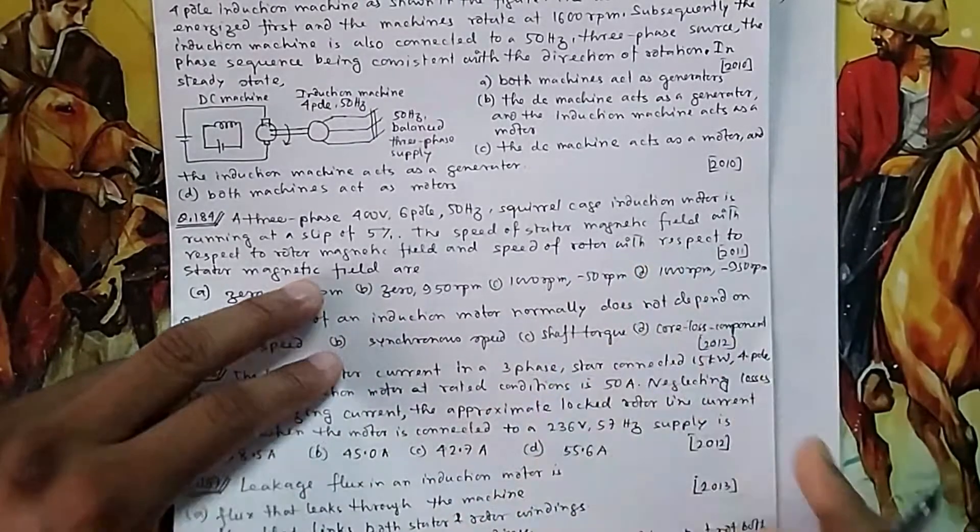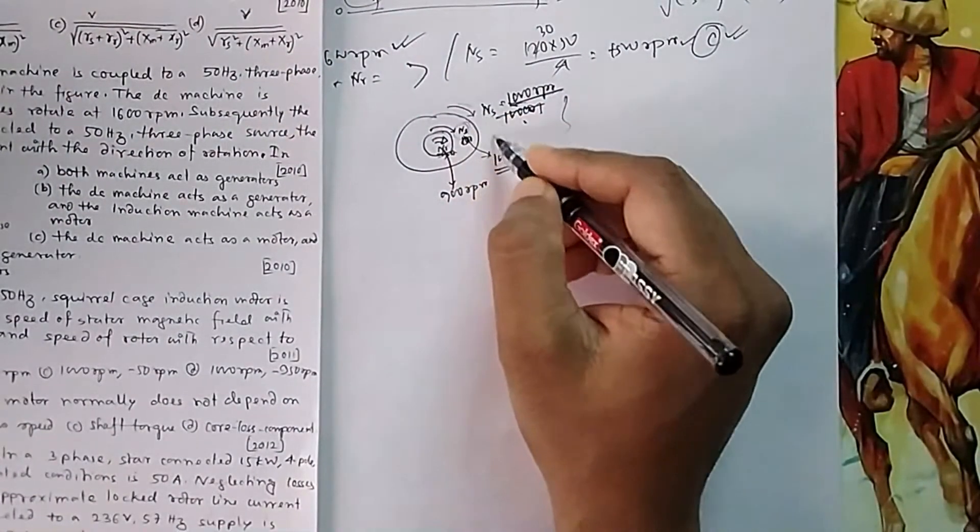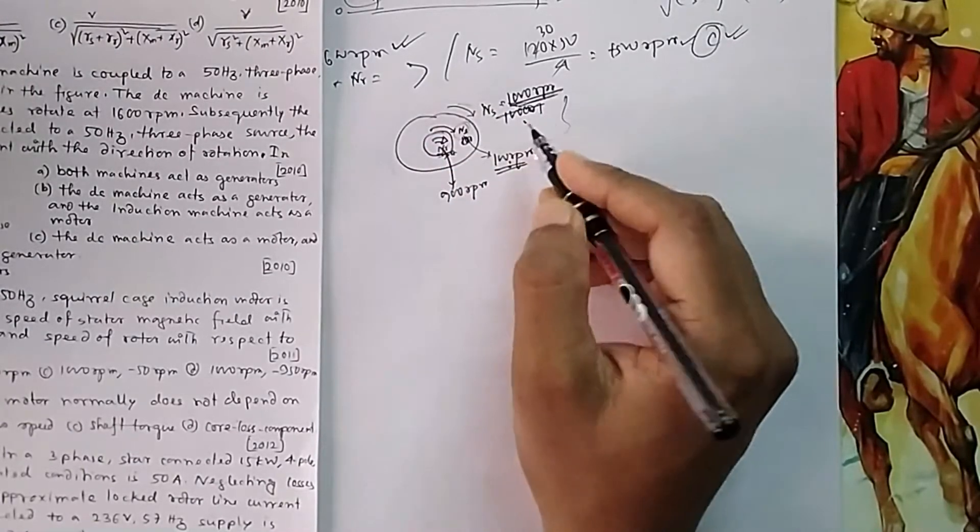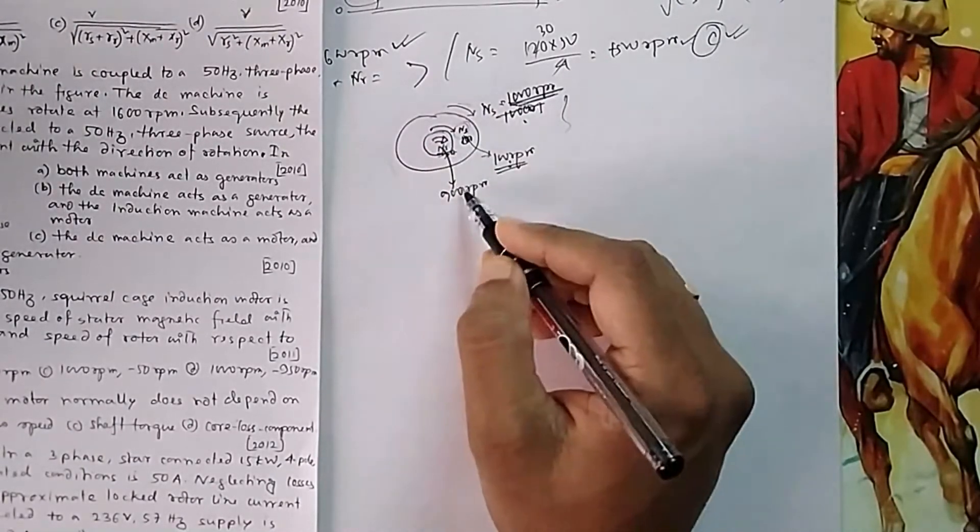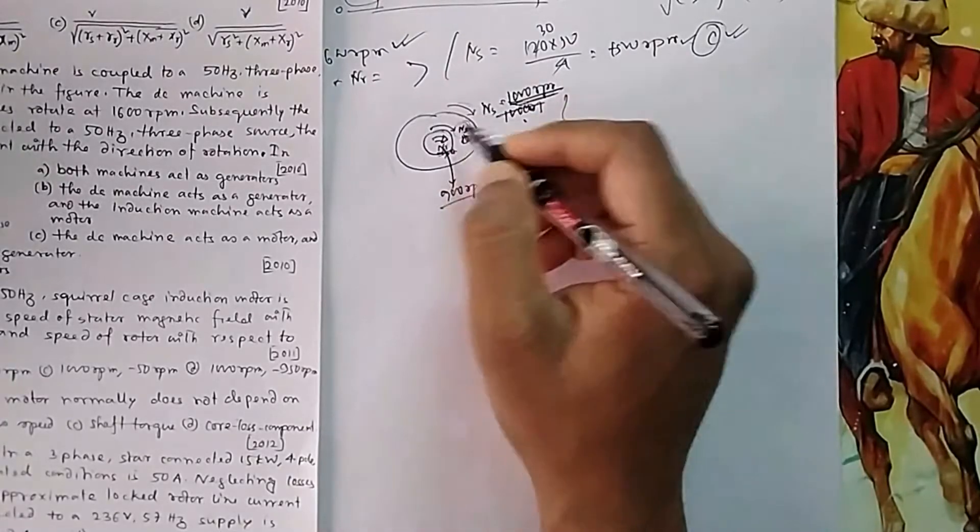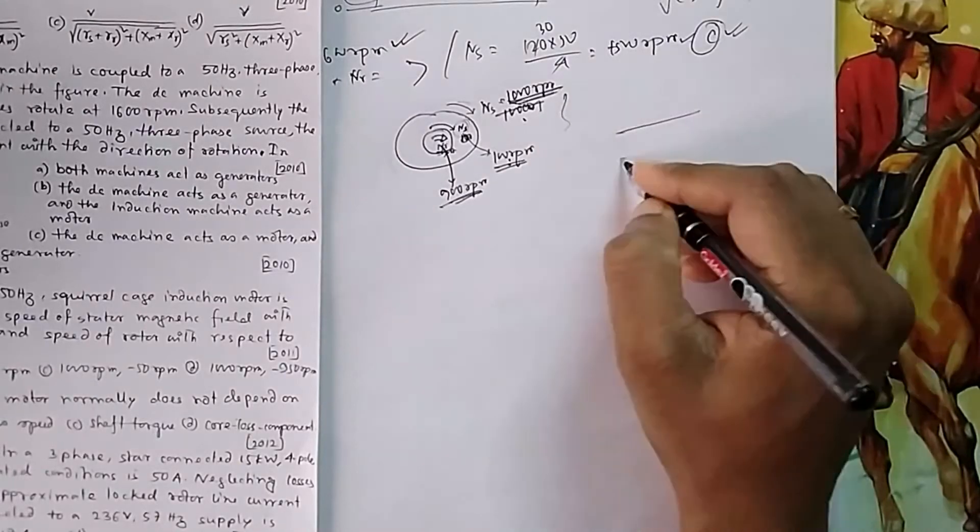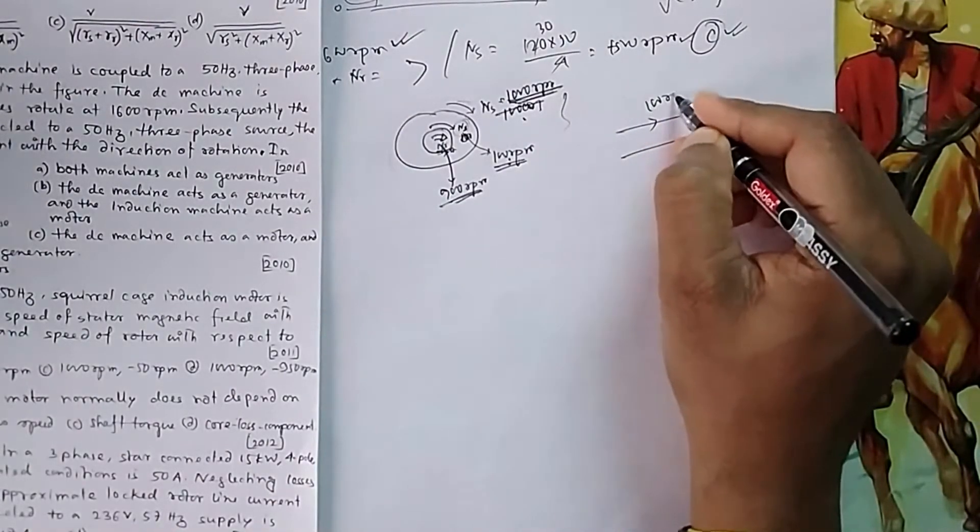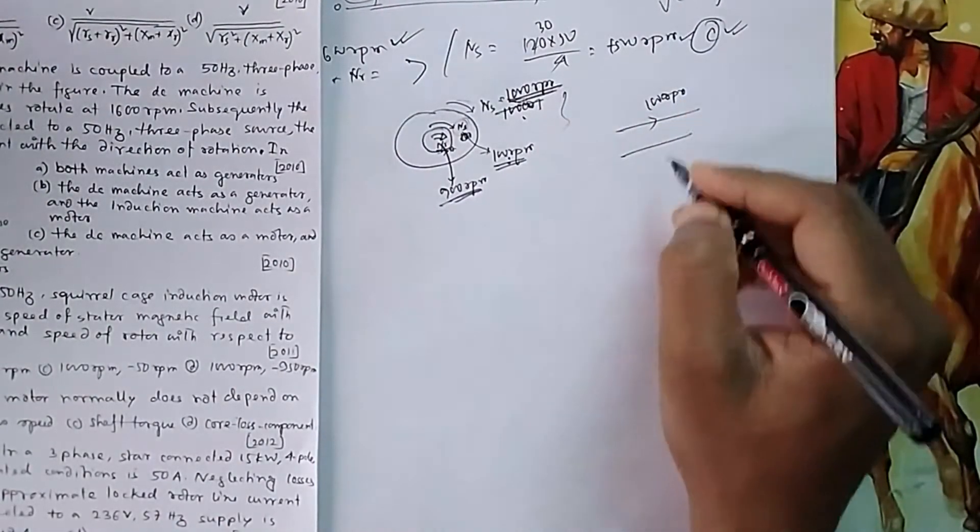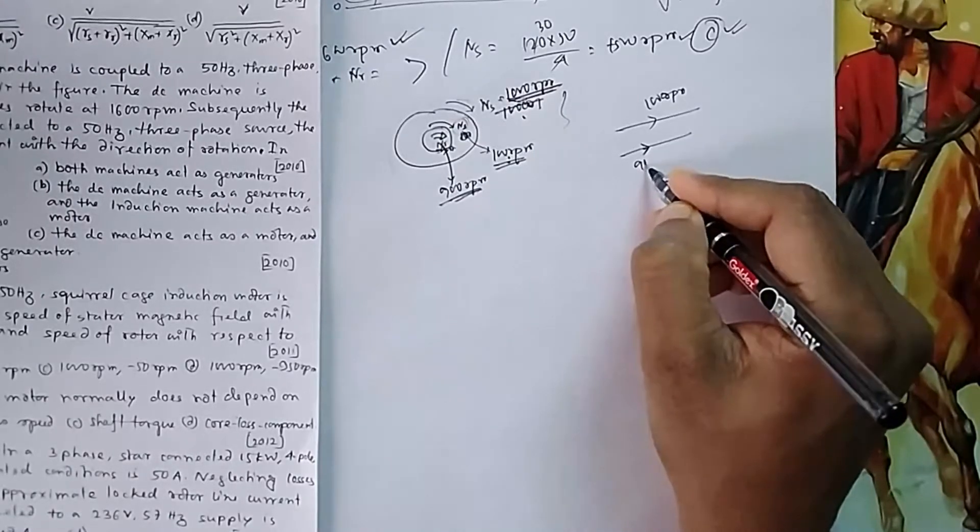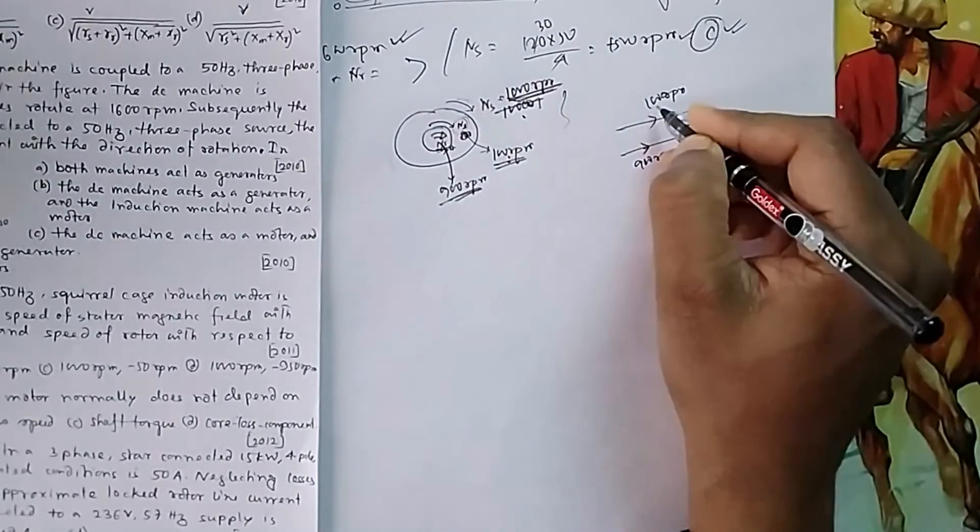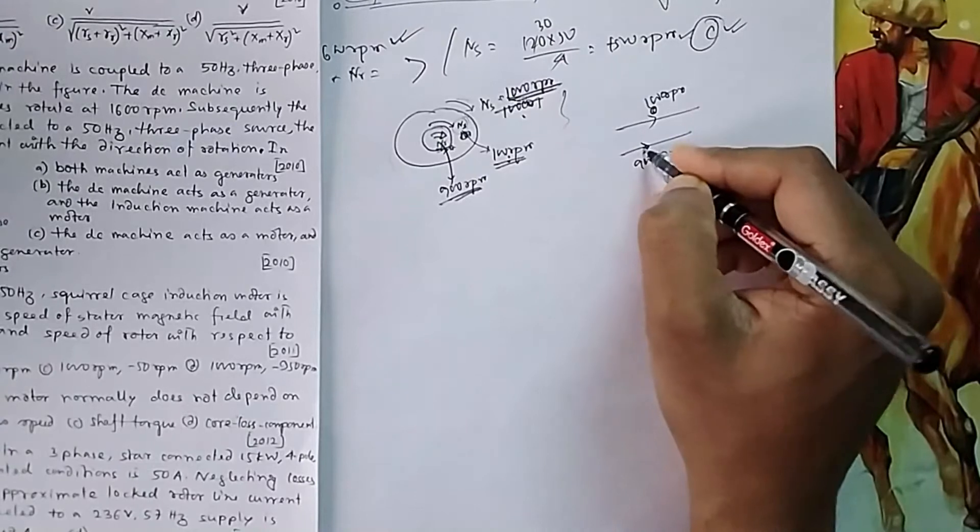The speed of rotor with respect to stator magnetic field. Someone is running here with speed 1000. How does it feel? It will feel rotor is rotating behind it at 900 RPM. Because you are rotating at 1000, suppose you are moving in a car at 1000 speed, and another car is moving behind you at 900.